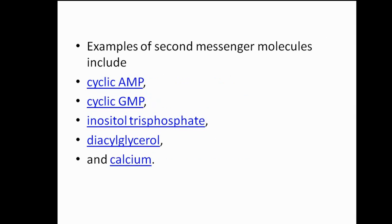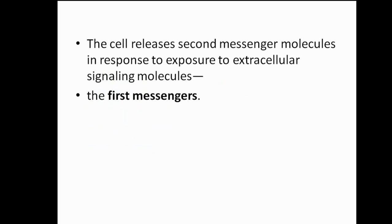The examples of 2nd messenger molecules include cyclic AMP, cyclic GMP, inositol triphosphate, diacylglycerol, and calcium. The cell releases 2nd messenger molecules in response to exposure to extracellular signaling molecules.